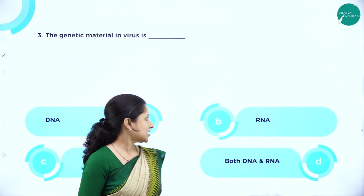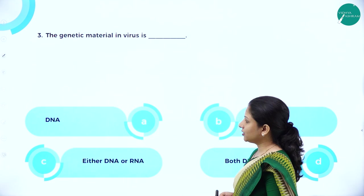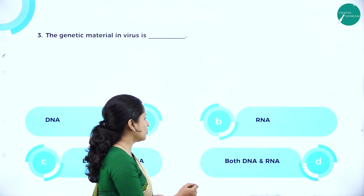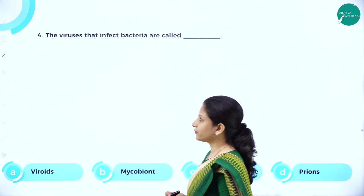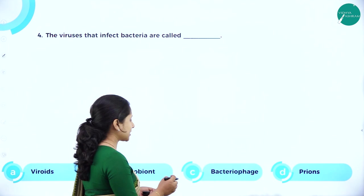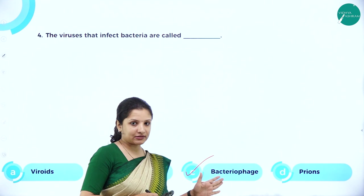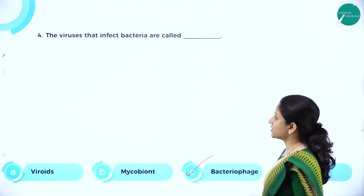Next: 'The genetic material in viruses — is it DNA, RNA, both, or none?' It is both DNA and RNA, because viruses can have double-stranded DNA, single-stranded RNA and also double-stranded RNA. When both A and B are correct options, the right answer is 'both DNA and RNA'. Next: 'The viruses that infect bacteria are called — viroids, microbiome, or bacteriophages?' Viroids are not viruses; they are different organisms. Bacteriophages are the correct answer — they are viruses capable of infecting bacteria. Don't get confused because the word 'bacteria' appears in the name; bacteriophages are viruses, not bacteria.